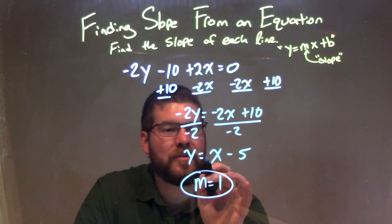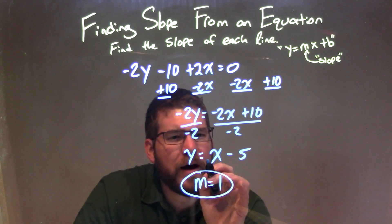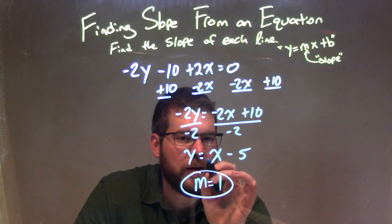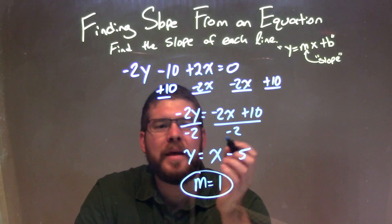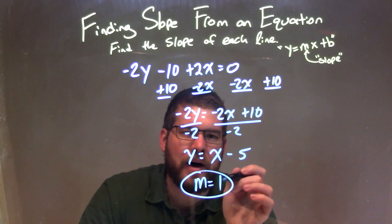So y equals x minus 5. We are now in our slope intercept form, y equals mx plus b, and our m value is the coefficient in front of x. That coefficient is 1, it's not really written but we know it's 1. And so our final answer for the slope is m equals a positive 1.